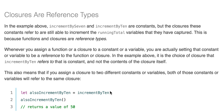In the example above, incrementByTen and incrementBySeven are constants, but the closures these constants refer to are still able to increment the runningTotal variables that they have captured — and that's what capturing is. That instance has captured the particular state. That's because they are reference types — just referring to different memory locations. Whenever you assign a function or closure to a constant or variable, you are actually setting that constant or variable to be a reference to the function or closure.